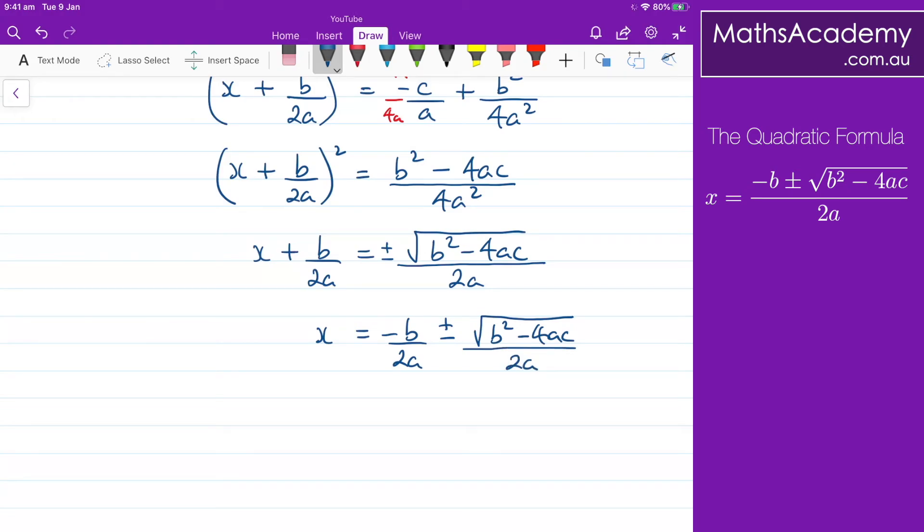And obviously we have a common denominator here so I can simplify this a little bit. -b ± √(b² - 4ac) and that is all over 2a. And there we have the quadratic formula.